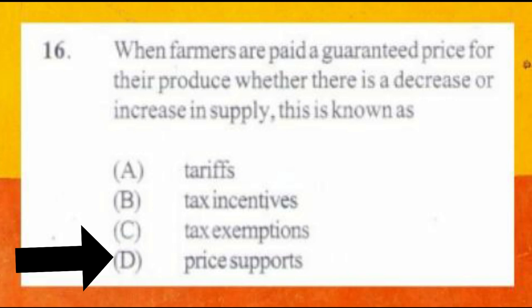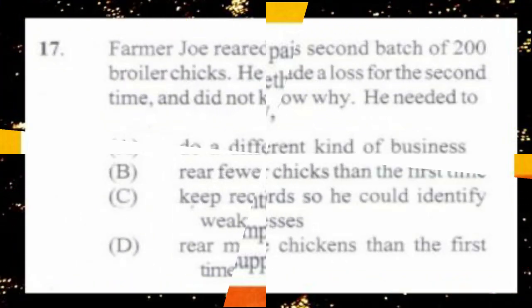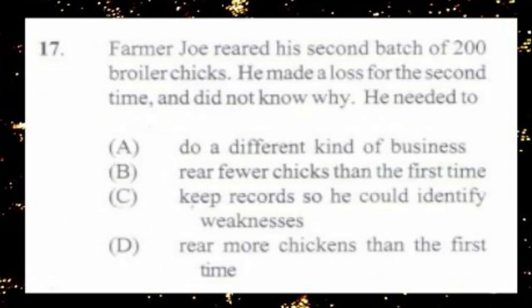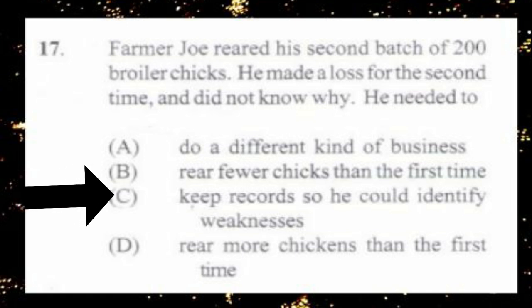Question number 17. Farmer Joe reared his second batch of 200 broiler chicks. He made a loss for the second time and did not know why. He needed to: A. Do a different kind of business, B. Rear fewer chickens than the first time, C. Keep records so he could identify weaknesses, D. Rear more chickens than the first time. The answer is C, keep records so he could identify weaknesses.